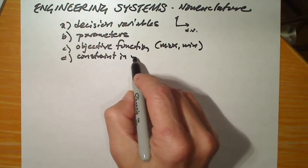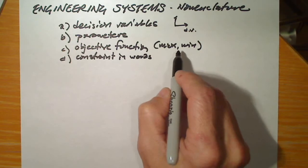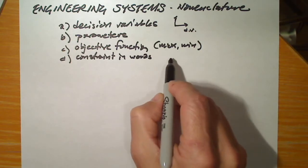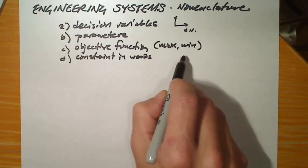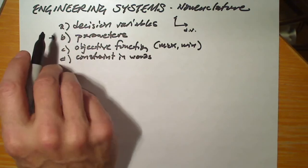You might remember that constraints are expressed as equations, either equalities or inequalities, or balance equations. So that brings us back to what are parameters?